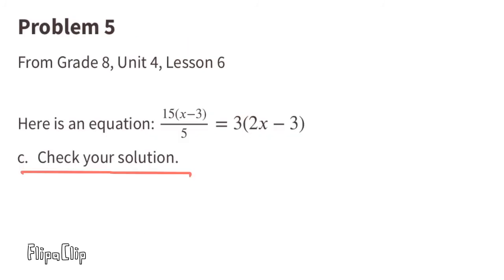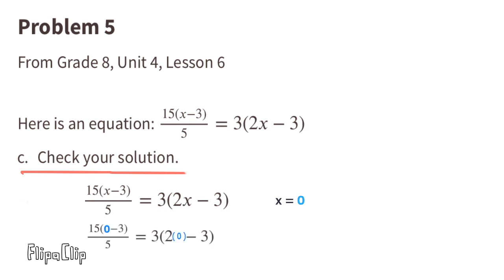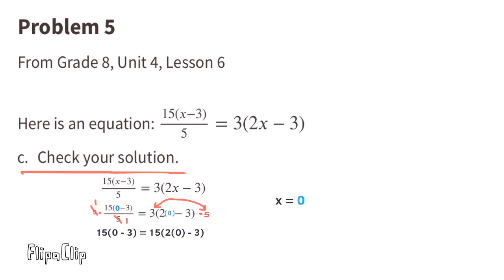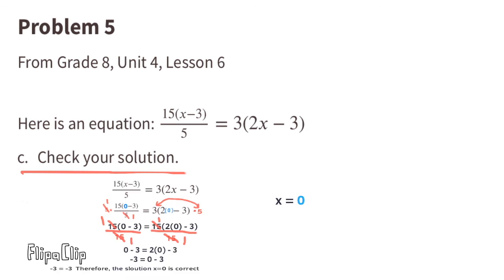Part C: Check your solution. Substitute x with 0. We have 15 times (0 minus 3) over 5 equals 3 times (2 times 0 minus 3). Multiply both sides by 5, then divide both sides by 15. This gives 0 minus 3 equals 2 times 0 minus 3, so negative 3 equals 0 minus 3. Yes, that's true — negative 3 equals negative 3. Therefore, the solution x equals 0 is correct.